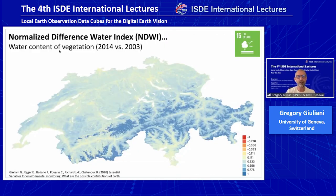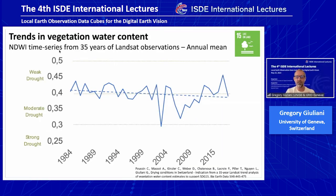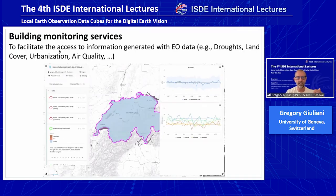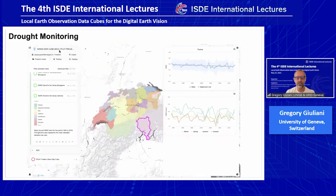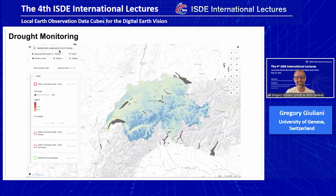We generated the NDWI — the Normalized Difference Water Index — time series for the entire country. It's a proxy for vegetation water content. Comparing at the national scale the situation in 2014, when it was rainy, with 2003, you see the impact of the drought. You can generate the time series and see a small decrease in vegetation water content over the last 35 years. You can disaggregate this information in a monitoring service we set up for the government at the national scale, at the cantonal level, by season. You can compare dates with a slider, have an animation, and look at specific maps to really explore the impact of the drought.